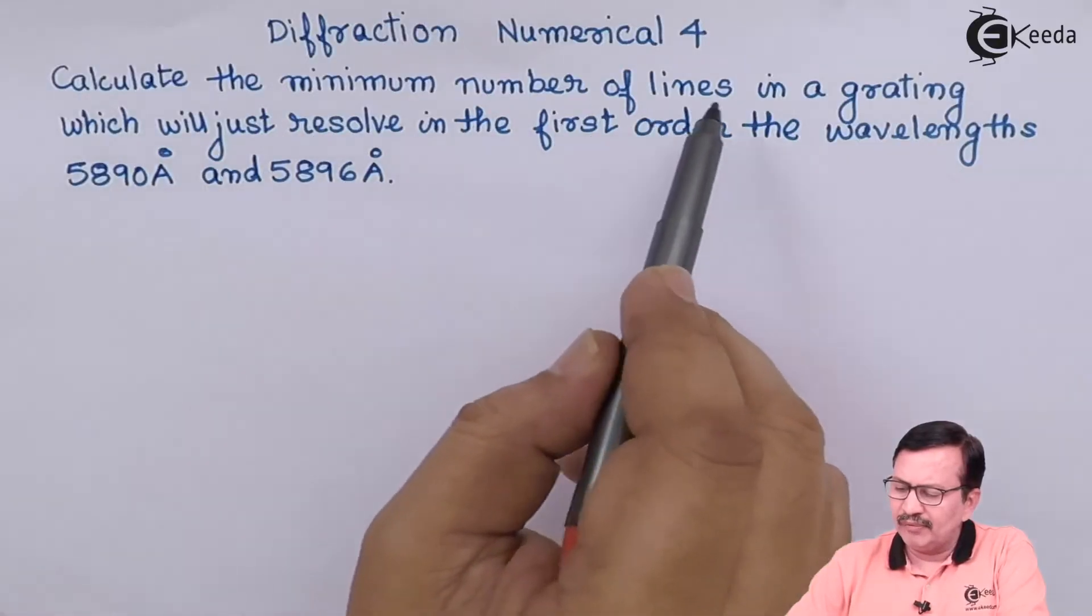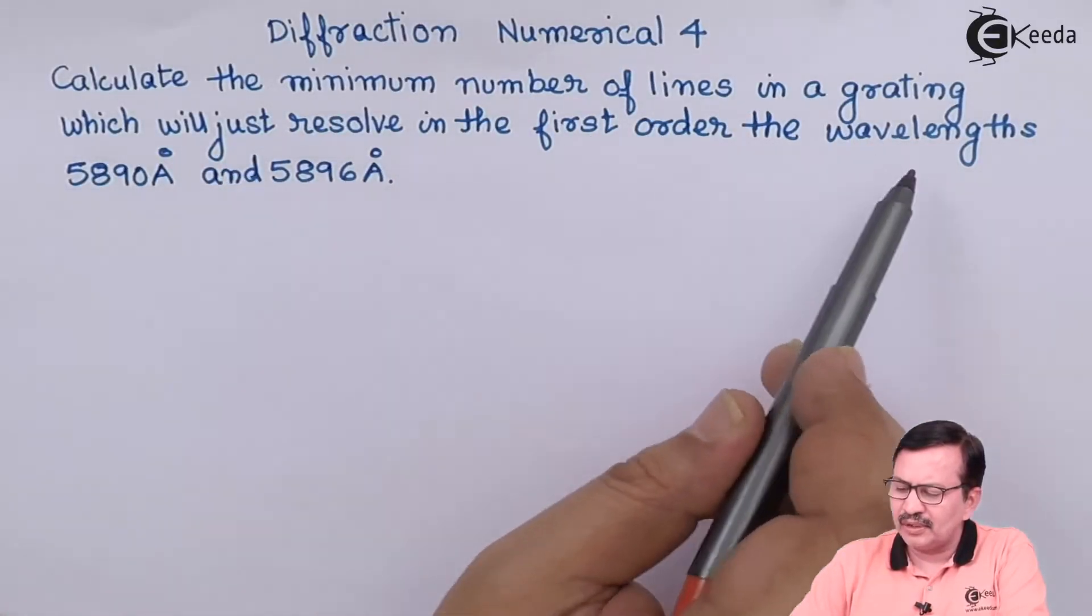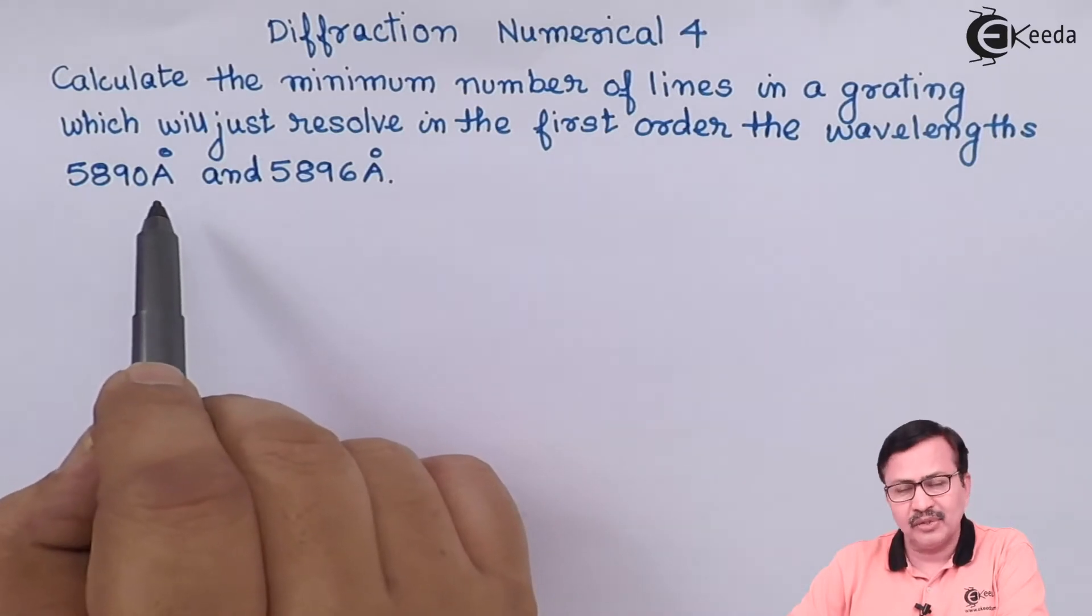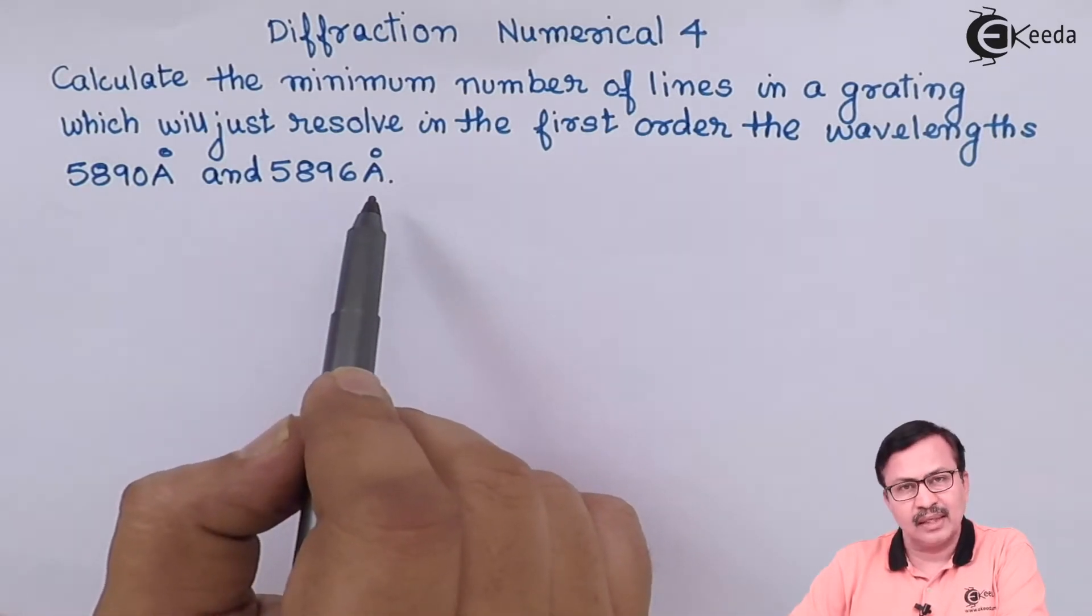Calculate the minimum number of lines in a grating which will just resolve in the first order the wavelengths 5890 angstroms and 5896 angstroms.